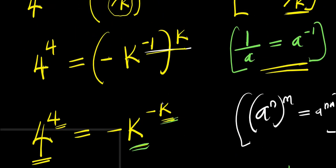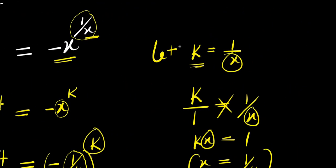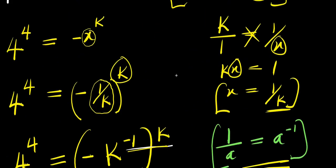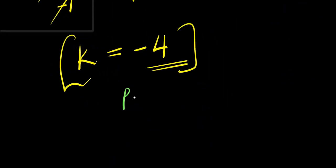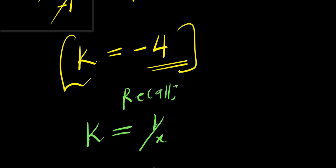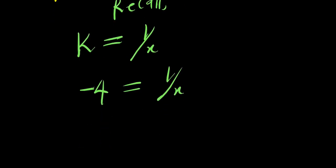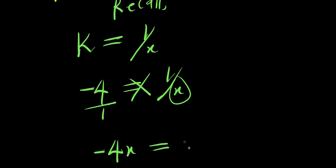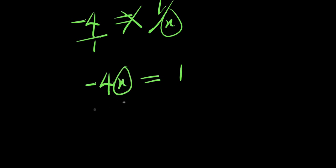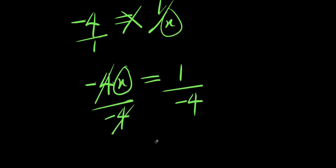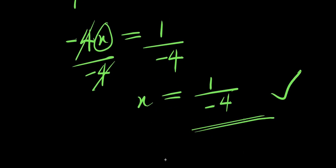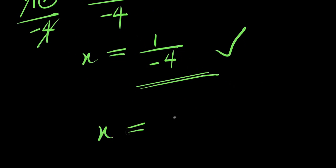This is just our k, and what are we solving for? We are solving for x. We are going to use the equation we said earlier: let k equals 1 over x. Recall that k equals 1 over x, that means negative 4 equals 1 over x. We can isolate x by cross-multiplying: x times negative 4, that is negative 4x equals 1. Isolating x, we divide by negative 4, so x equals 1 over negative 4.